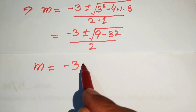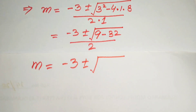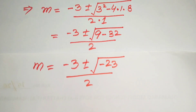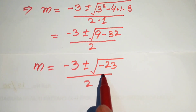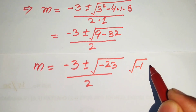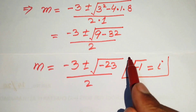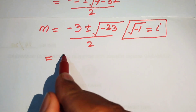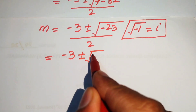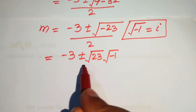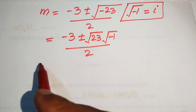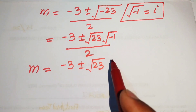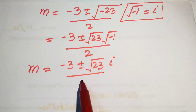In the next step: m equals minus 3 plus or minus square root of 9 minus 32, which equals minus 23, divided by 2. We see that a negative sign appears inside the square root. Since square root of minus 1 equals iota, we break this as: minus 3 plus or minus square root of 23 times square root of minus 1, divided by 2. Therefore, m equals minus 3 plus or minus square root of 23 times iota, divided by 2.